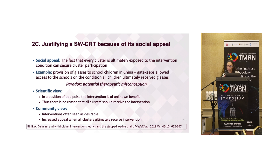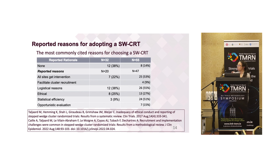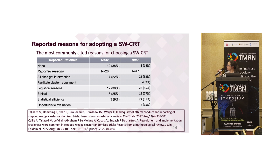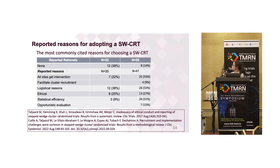So rounding up — what are the most common reasons why people adopt a stepped wedge design? The first column shows N=32 trials, which are reported reasons for stepped wedge designs conducted up to 2017. The N=55 are the stepped wedge trials reported between 2017 and 2022. Pretty similar between the two cohorts, with a slight increase in reporting some rationale. Almost all designs nowadays are giving some rationale for using a stepped wedge design. Common reasons are that all sites get the intervention, logistical reasons, and statistical efficiency. And also this opportunistic evaluation — we might put the Gambia hepatitis study into that category.